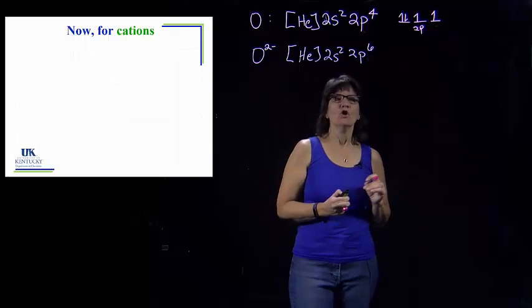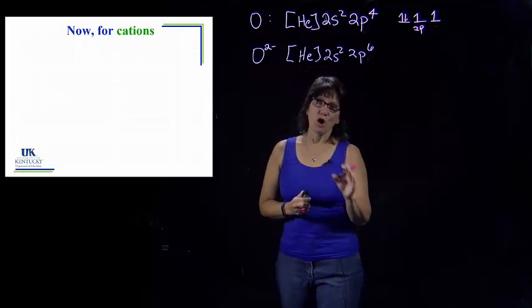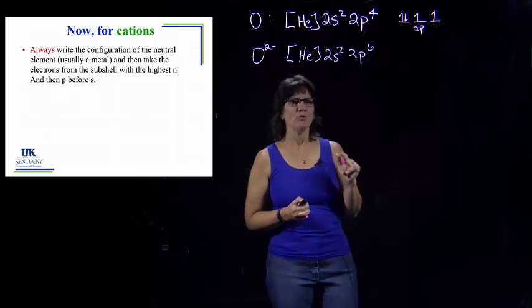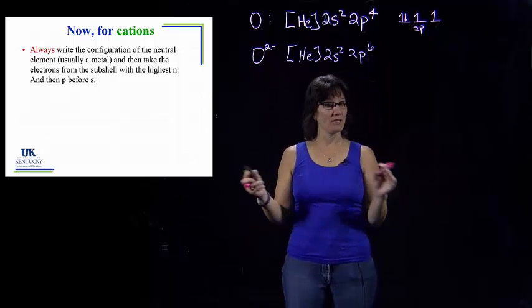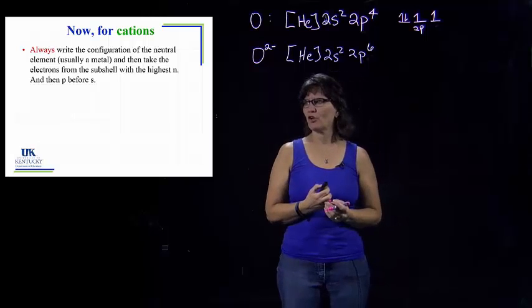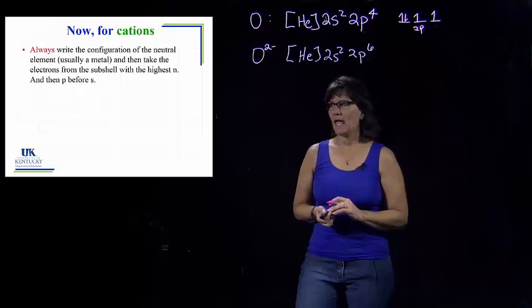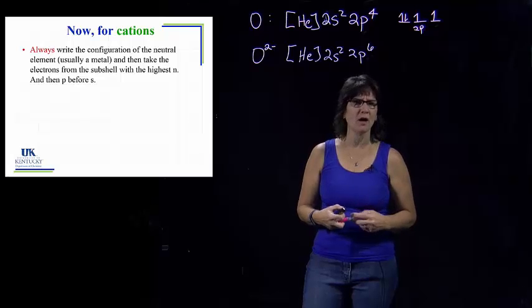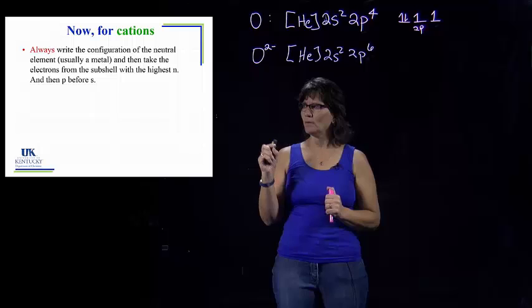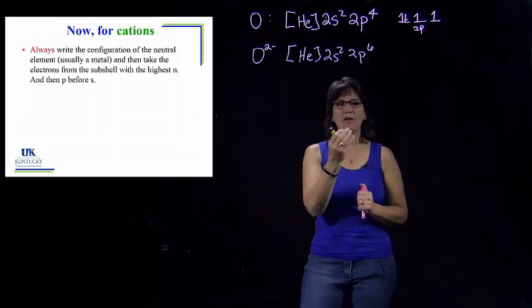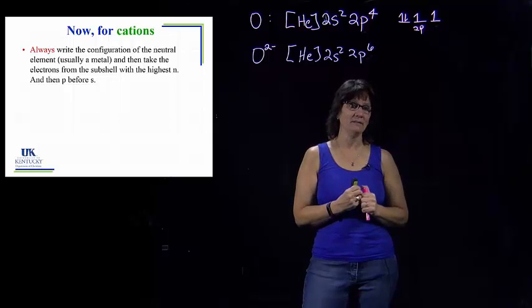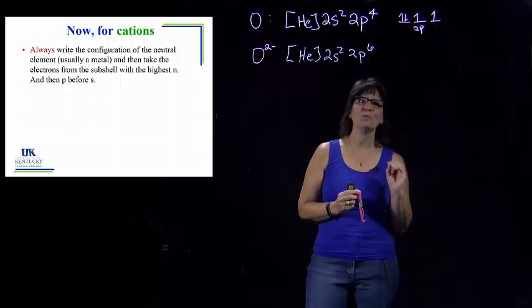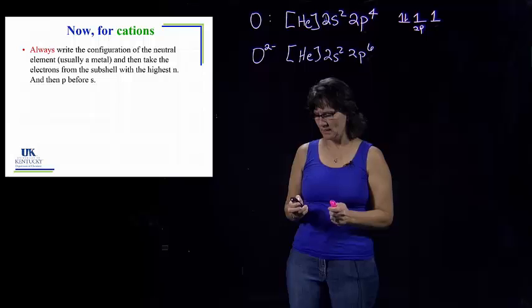Now, for cations, what students want to do for cations that's wrong is just do it for an atom that's got two less electrons, and that's not the same thing as what we need to do. You really have to do this if you want to get it right every time. Always write the electron configuration of the neutral element first, and things that remove electrons are typically metals. We can write them for non-metals, but non-metals don't tend to want to lose electrons. So you find that metal, and you're going to take the electrons out of the subshell with the highest n. Make sure you're looking for the highest n, and that's what students don't do. From the highest n, and then you would always remove p's before s's.